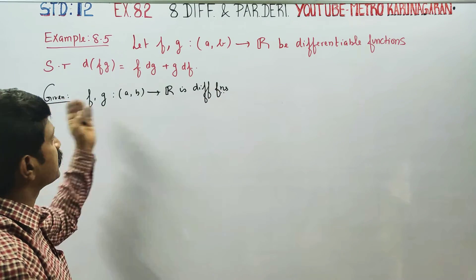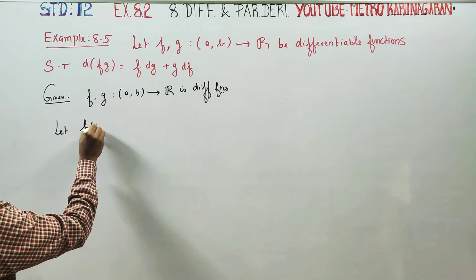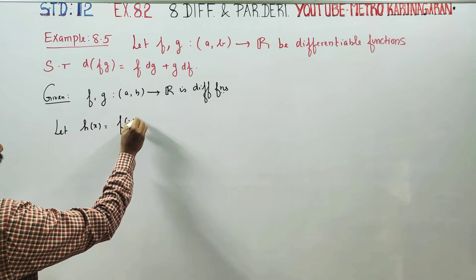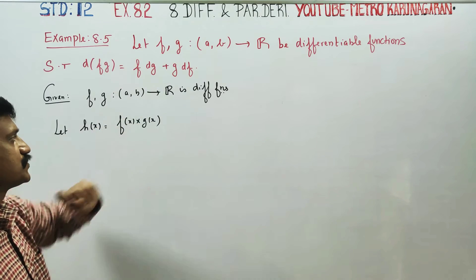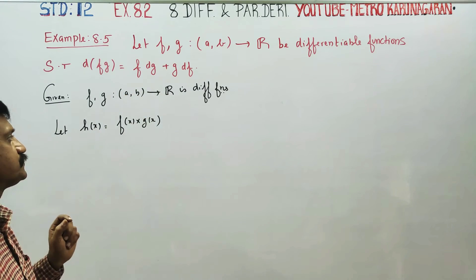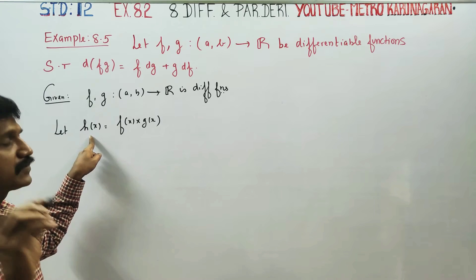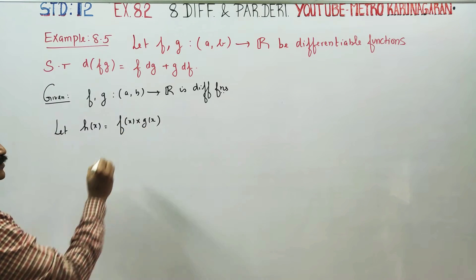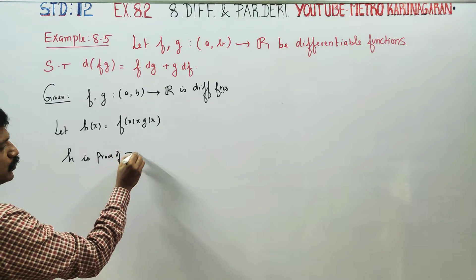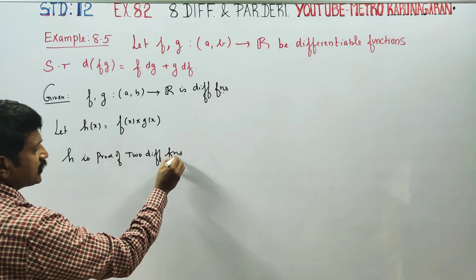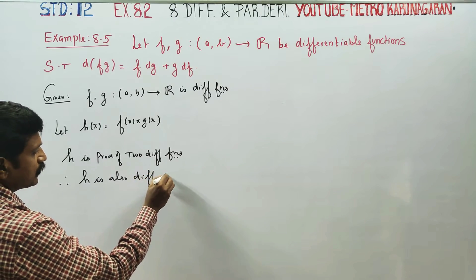Given that, I am going to define a new function h, where h(x) = f(x) into g(x). Since f and g are differentiable functions, the product of two differentiable functions is differentiable. Therefore, h is also differentiable on [a, b].